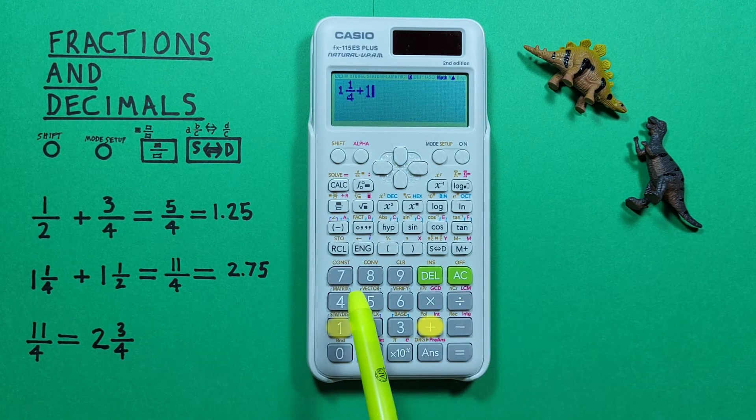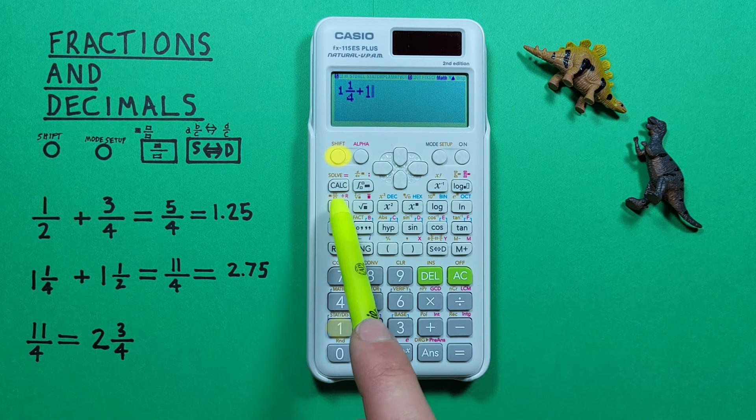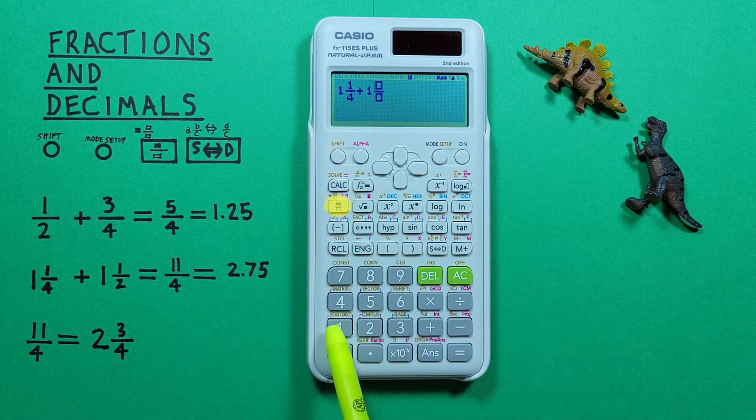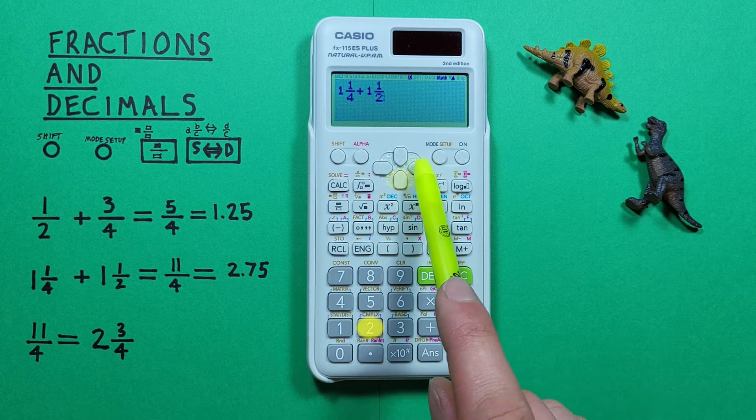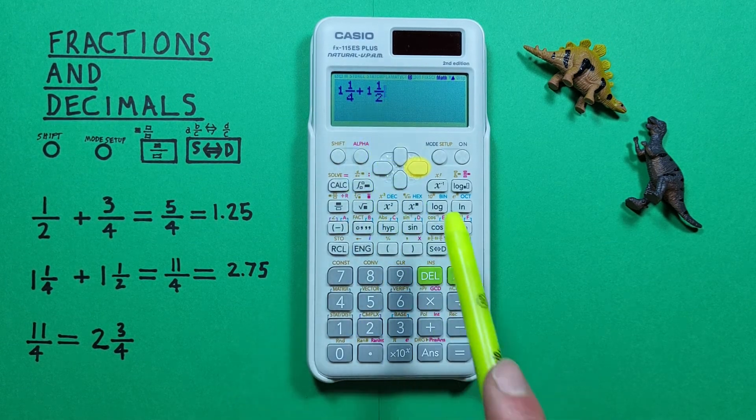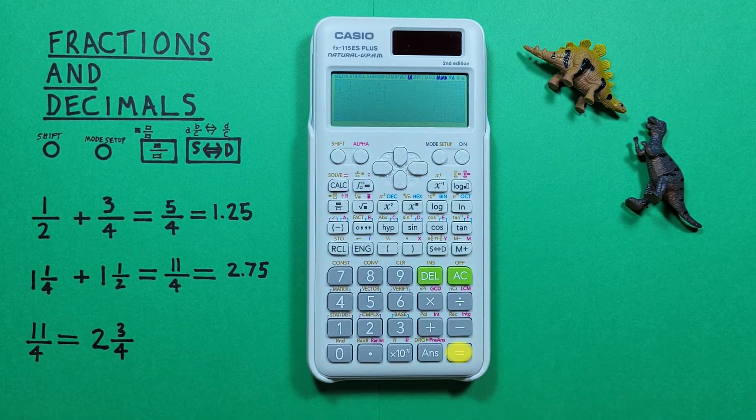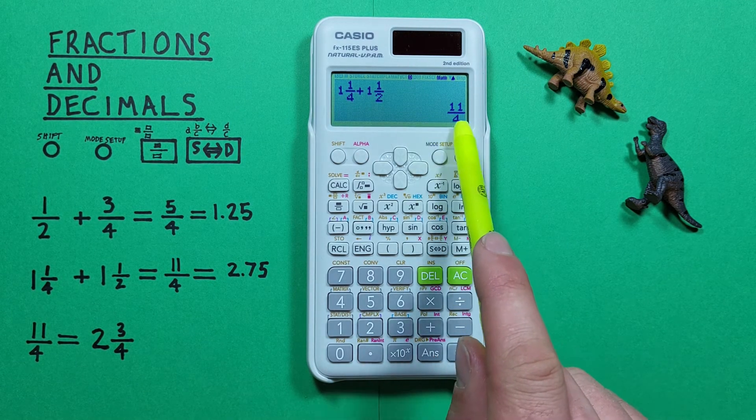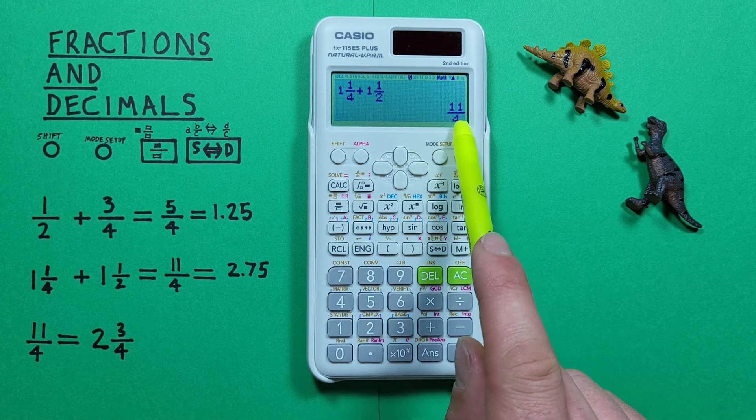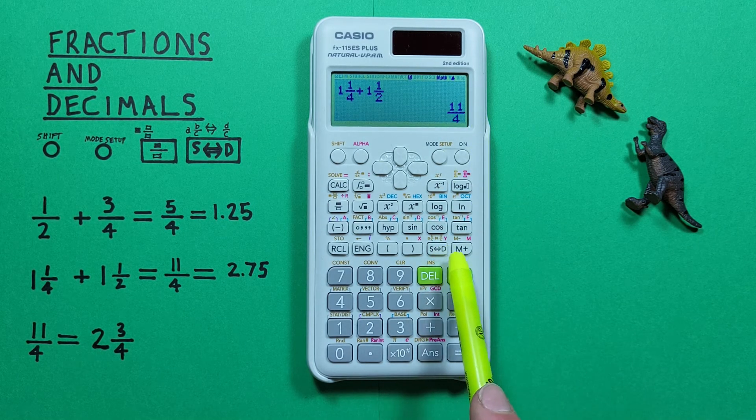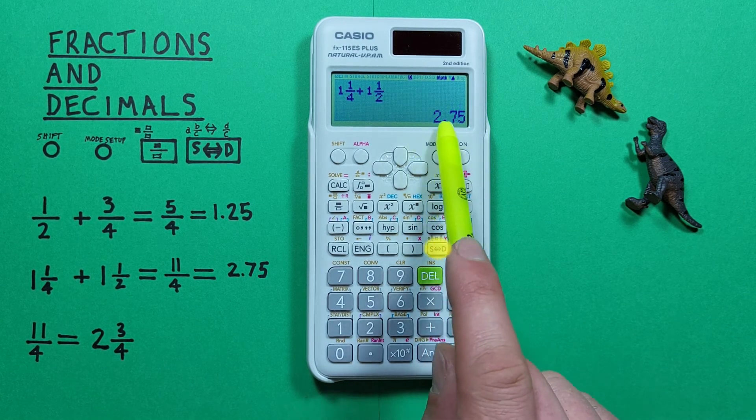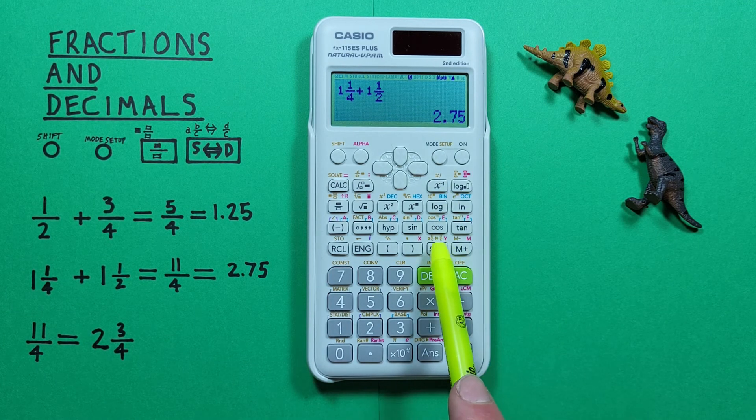Plus 1. And then shift fraction. 1 in the top box, 2 in the bottom. There we go. We can use the S to D key to convert to a decimal and back to a fraction.